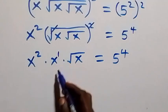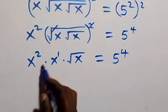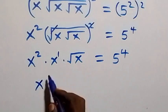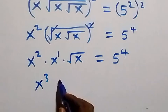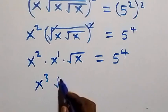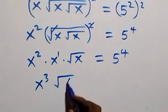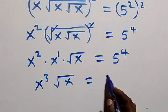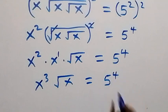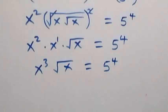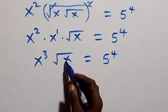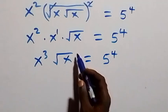Here we can add these powers since they multiply, and we have x raised to power 3, then times root x, now equals to 5 raised to power 4. From here, the next step: we can square both sides again.